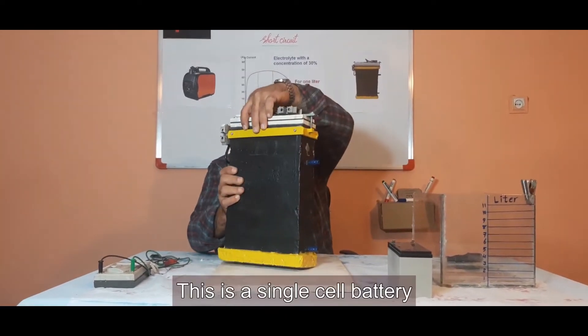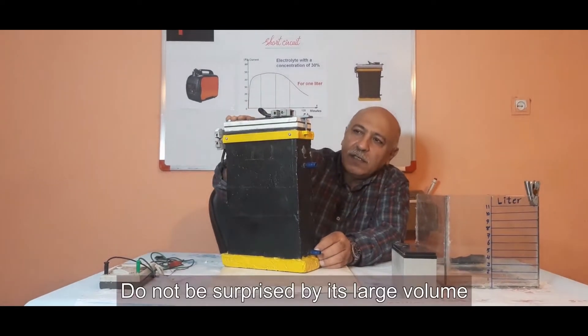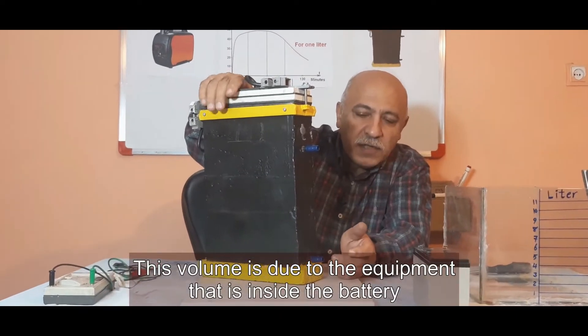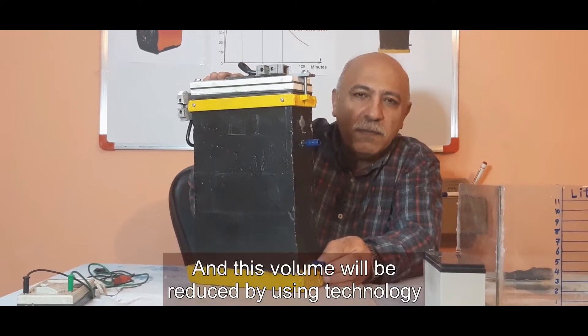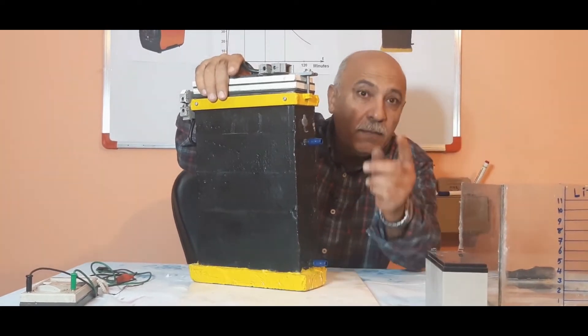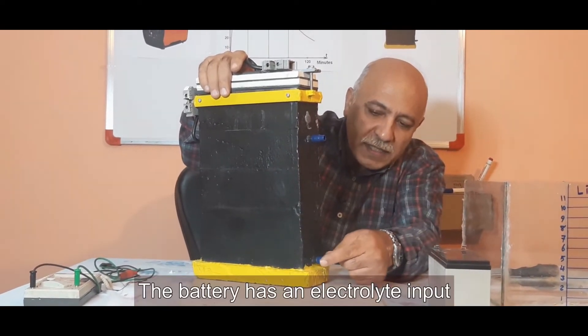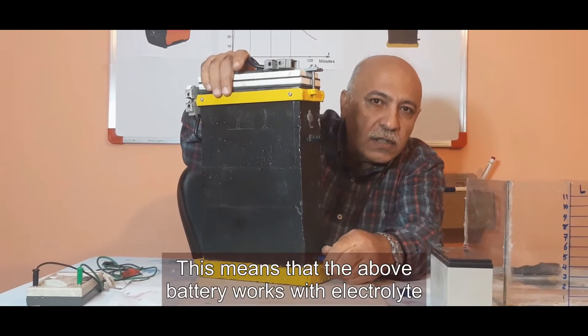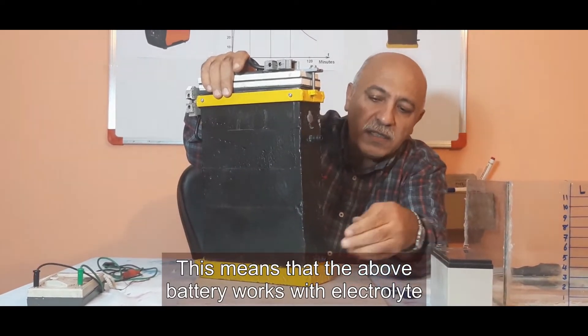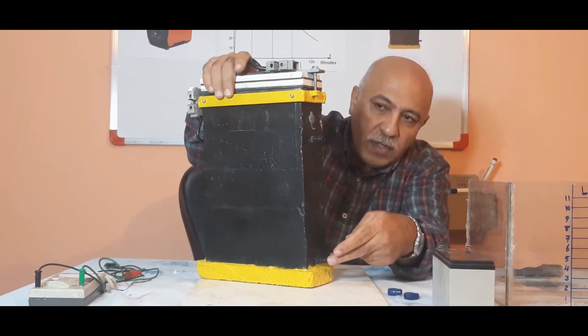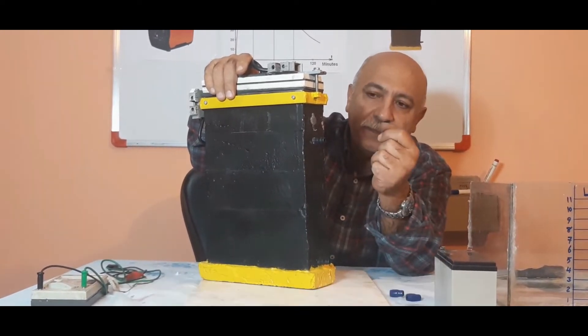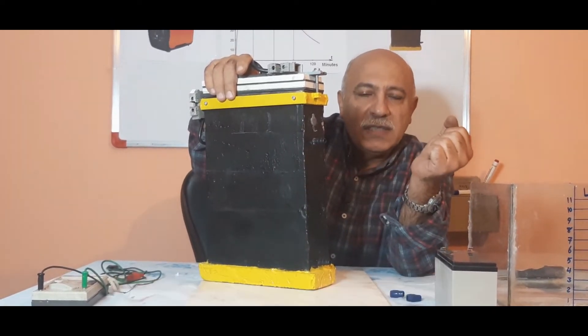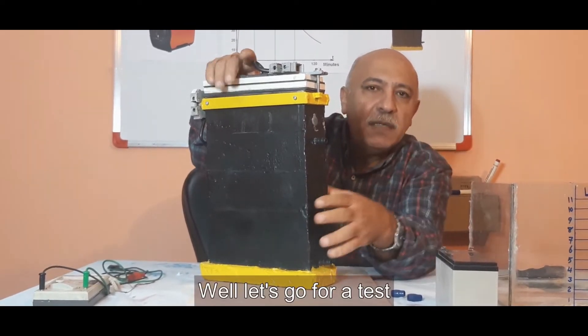This is the battery I made. This is a single-cell battery. Do not be surprised by its large volume. This volume is due to the equipment that is inside the battery, and this volume will be reduced by using technology. The battery has an electrolyte input and an electrolyte output. This means that the battery works with electrolyte. The volume inside the battery is 1350 cubic centimeters.